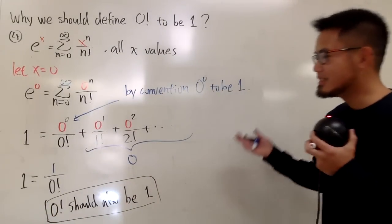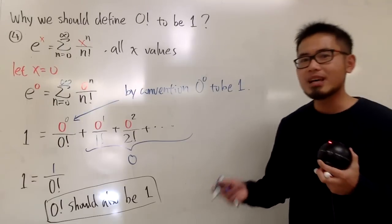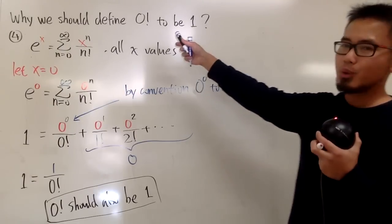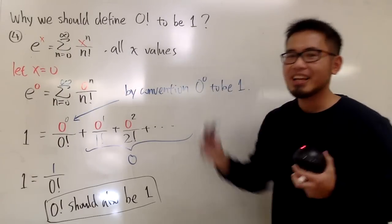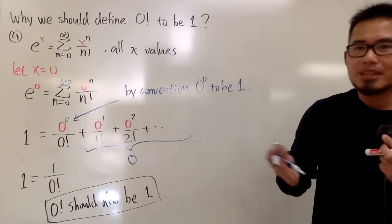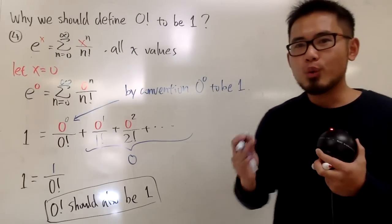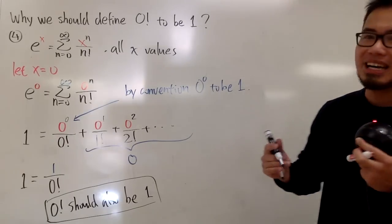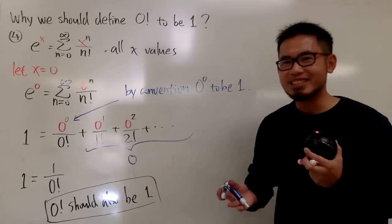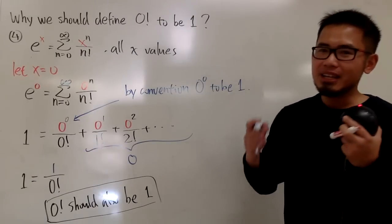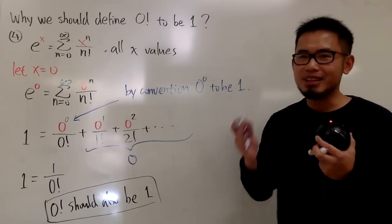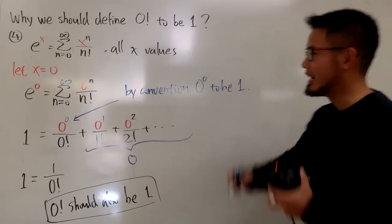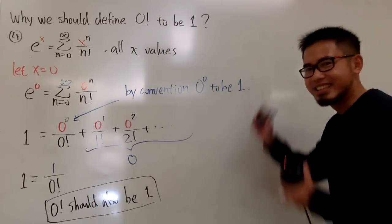Those are my four reasons on why we should define 0 factorial to be 1. Leave a comment below and let me know which reason you liked most. If you're new to my channel, please subscribe — thank you so much, and I'll see you guys soon.